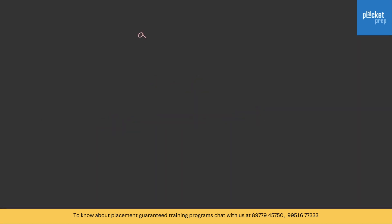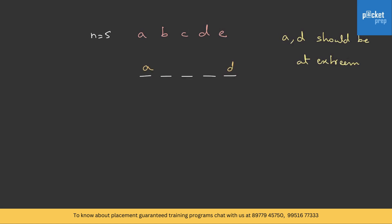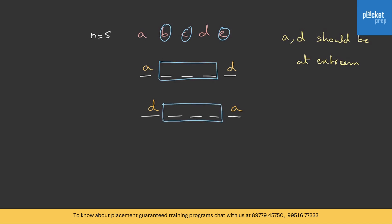Now let us get into Type 3 — problems based on objects with a fixed position. Suppose we have objects A, B, C, D, E, and the question says A and D should be at the extreme positions. There will be 5 slots. A can be at one extreme and D at the other, or D at one extreme and A at the other — 2 cases. In each case the remaining 3 letters (B, C, E) fill the middle 3 slots in 3! ways. Since there are 2 cases, we add: 3! + 3! = 6 + 6 = 12.